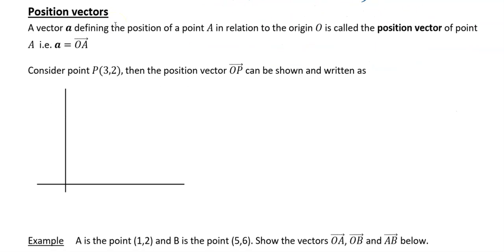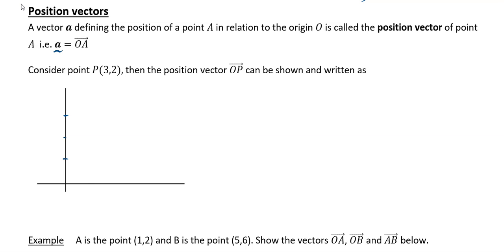Next we're going to look at position vectors. A vector defining the position of a point A in relation to the origin O is called the position vector of that point. The position vector of A is the vector that takes you from O to the point A. For example, if P is the point (3, 2), then the vector from the origin to P is the position vector of P.